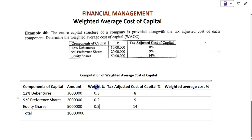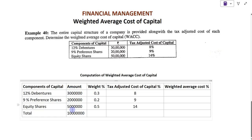Sometimes in the question they will already give the weight proportion, but if they have not given it, then we have to find it ourselves by dividing the component amount by the total. For example, 30 lakhs divided by 100 lakhs gives the proportion 0.3.